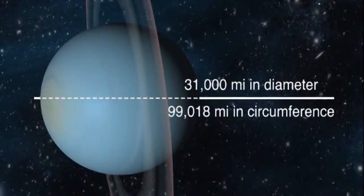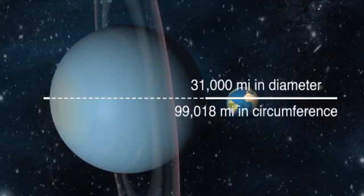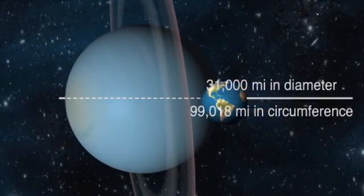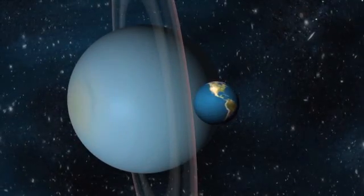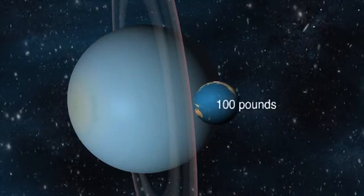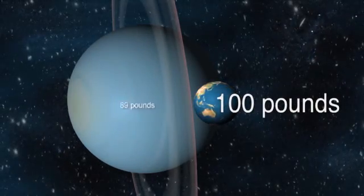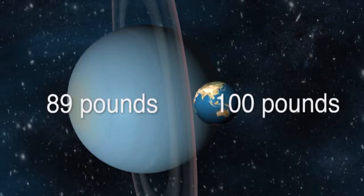Uranus' diameter is 31,000 miles, almost four times that of Earth. Despite the size difference, Uranus' gravity is only 89 percent as strong. A person weighing 100 pounds on Earth would weigh just 89 pounds on Uranus.